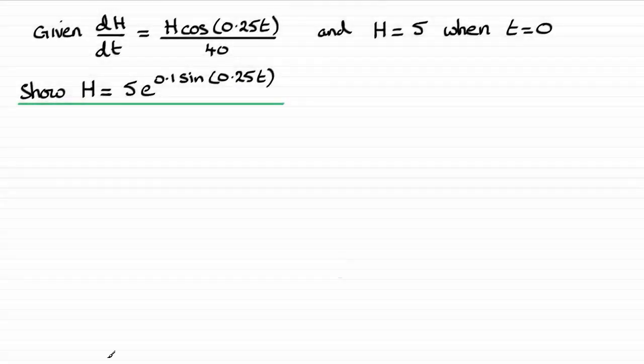Okay, so for this question we're given this differential equation and these initial conditions, that is that H equals 5 meters when t equals 0 seconds, and we're asked to show that H equals this result here.